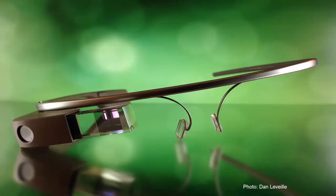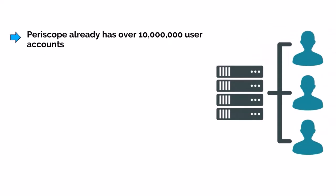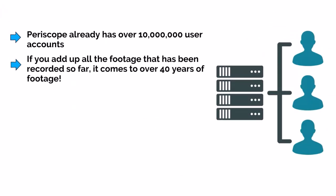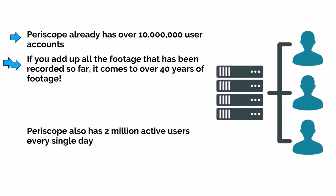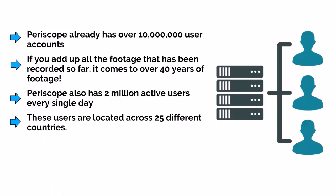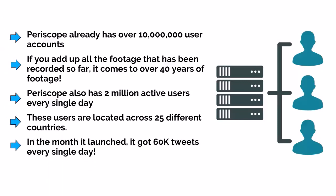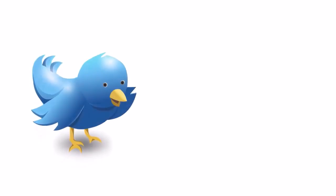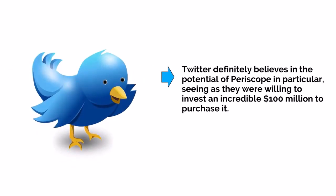Live video streaming is still very new — Periscope and its major competitors all launched only in the last year, and yet it's already gaining huge momentum. Periscope already has over 10 million user accounts, and all the footage recorded so far adds up to over 40 years. Periscope also has 2 million active users every single day across 25 different countries, and in the month it launched it got 60,000 tweets every single day. Twitter believed strongly enough in Periscope's potential to invest an incredible $100 million to purchase it.